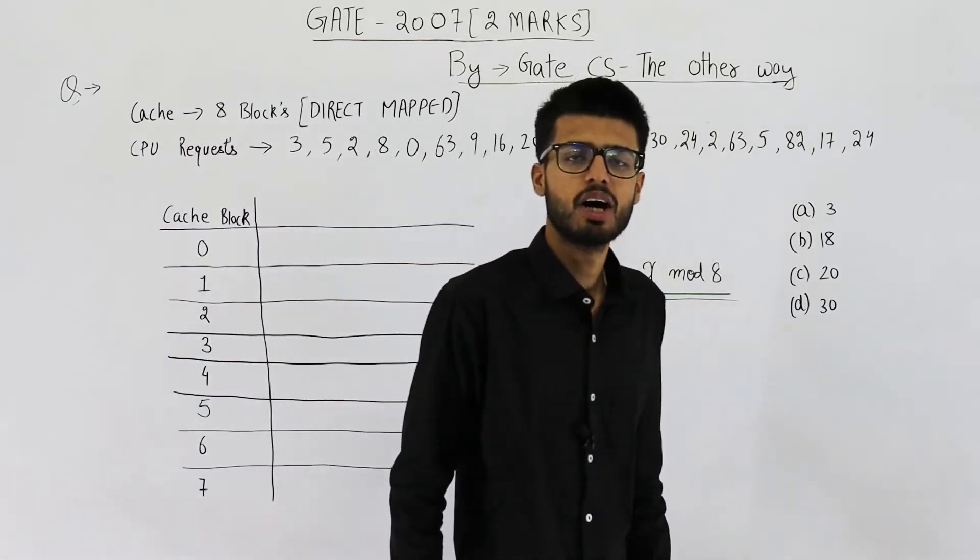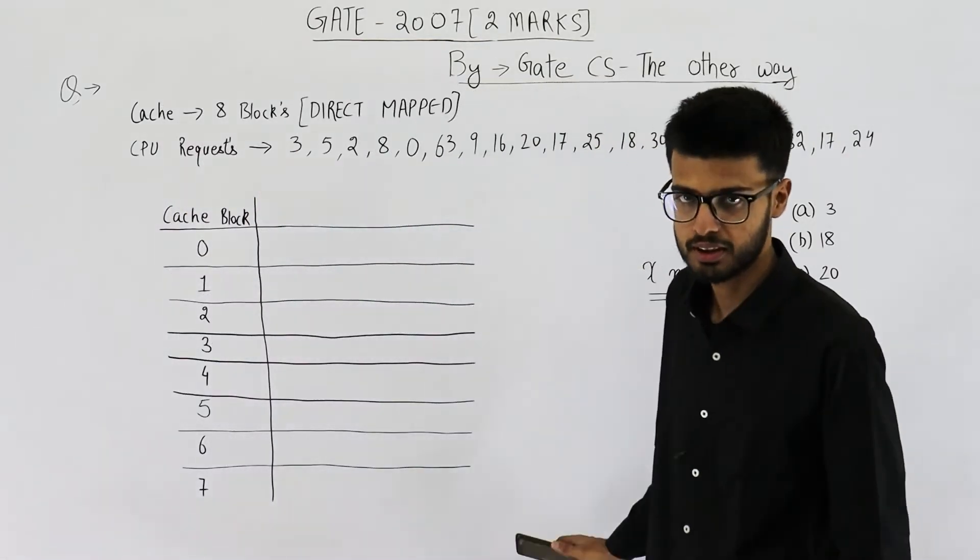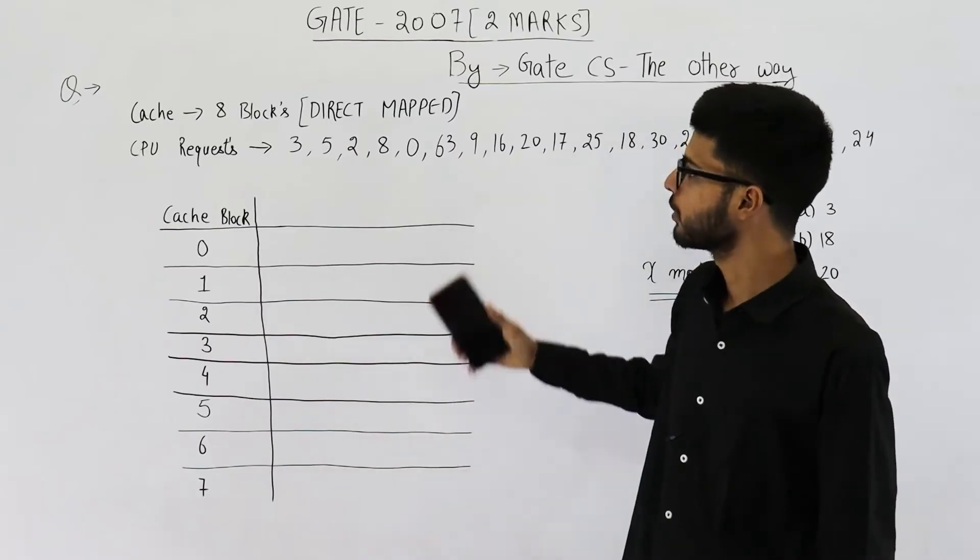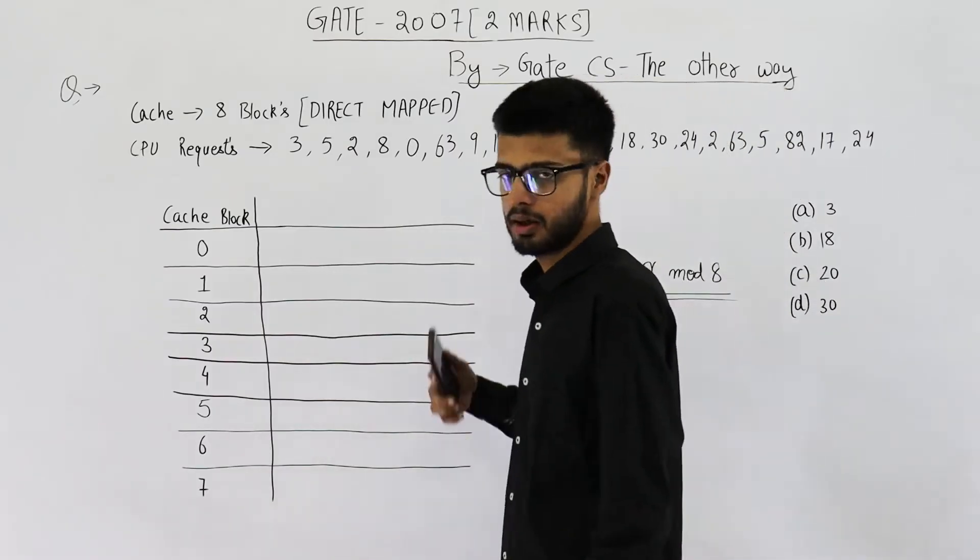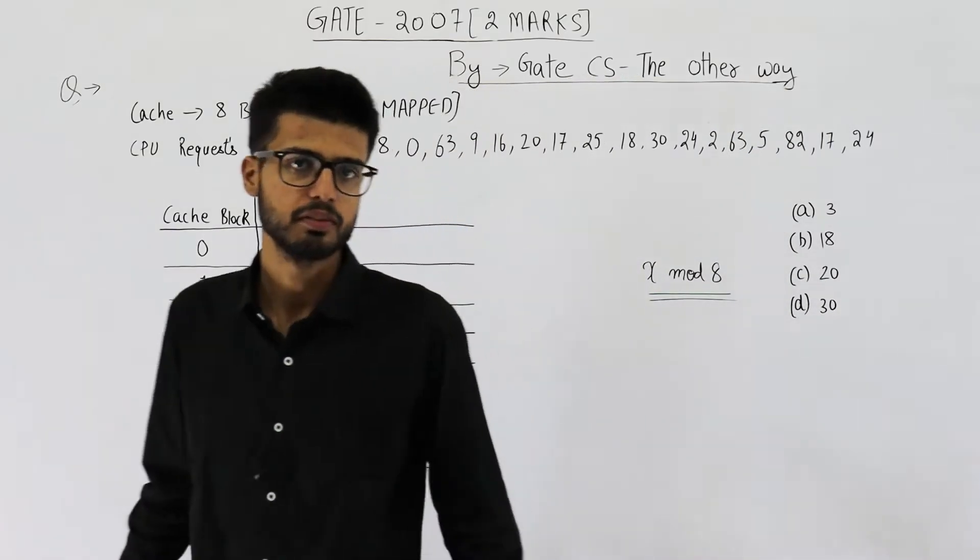Hello people, welcome back. So I have a question from GATE 2007 exam. It's from the topic of cache mapping and direct mapping to be specific.